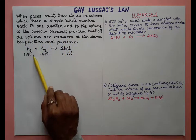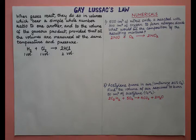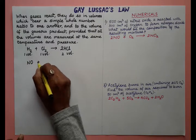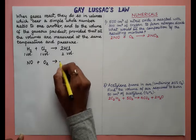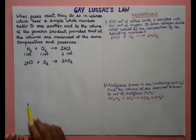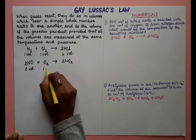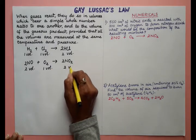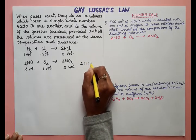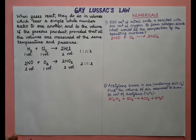Taking another example: nitric oxide reacts with oxygen to give nitrogen dioxide. Balancing the reaction, two volumes of nitric oxide react with one volume of oxygen to give two volumes of nitrogen dioxide. The ratio of reactants to product is 2:1:2. This ratio applies to both reactants and products, measured at the same temperature and pressure.